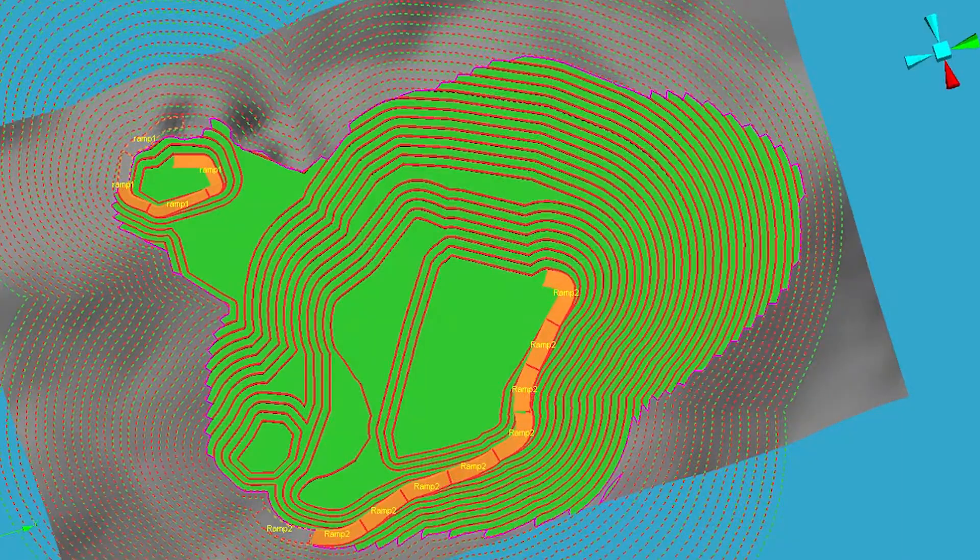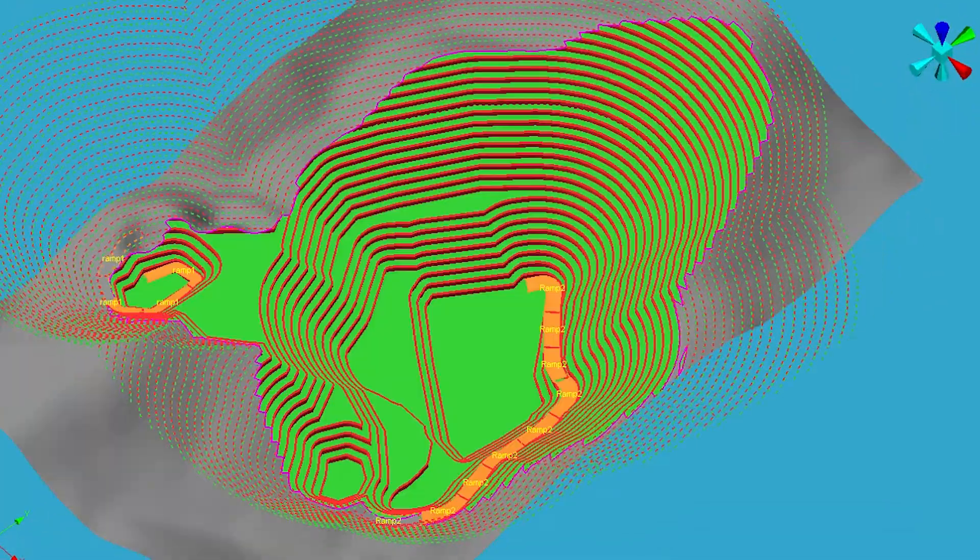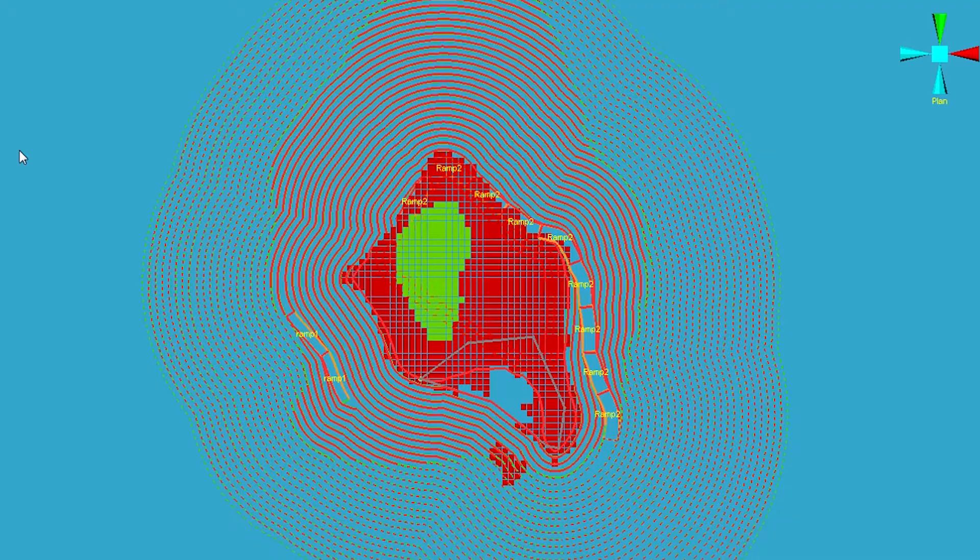For different areas in the pit they can specify different slope constraints, and based on all these rules the software automatically generates a pit design for you which you can then either go back and change the rules if it doesn't give you what you want, or maybe go back to the drawing board and create different scenarios so you can evaluate them against each other.